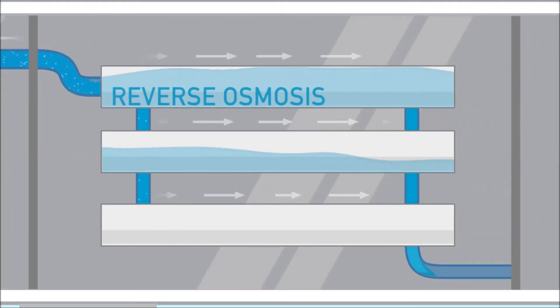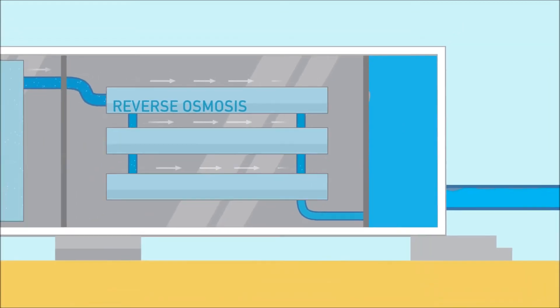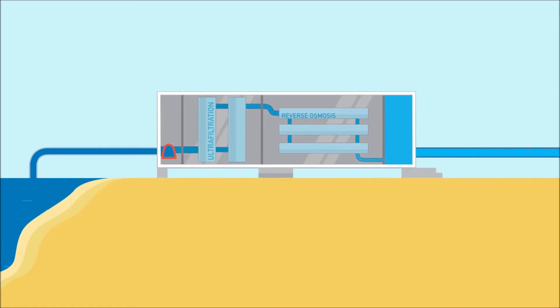Finally, reverse osmosis, the process through which salt ions are actually removed from the water. The water is clean at this stage, but not quite ready for drinking. Other processes, like chlorination and remineralization, are then used to polish that water and make it safe for drinking.